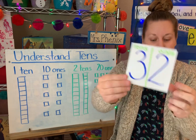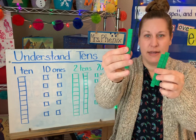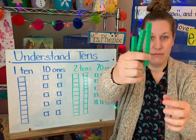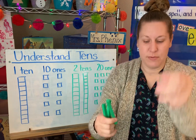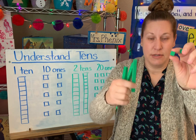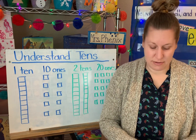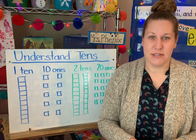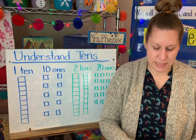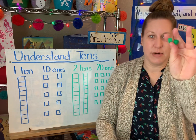It would look like this. Here's my three tens: 10, 20, 30, and then my two ones, 31, 32. So I can build that using my base 10 blocks, which you guys have and you will get to start using this week. So 32 looks like three groups of 10 and then two little ones.